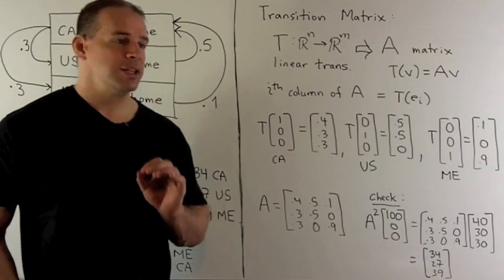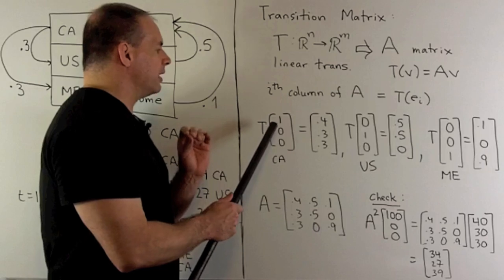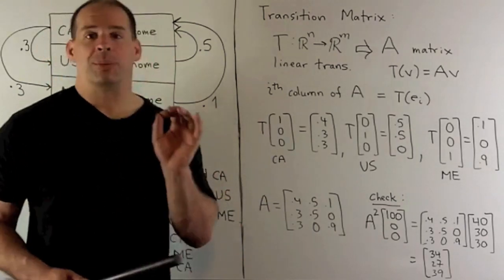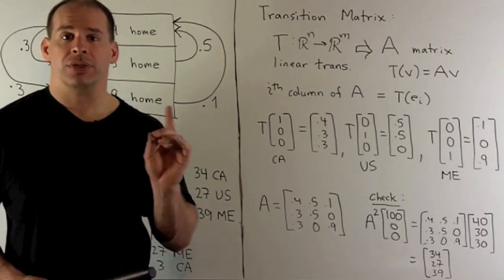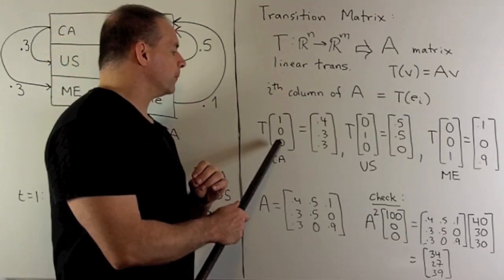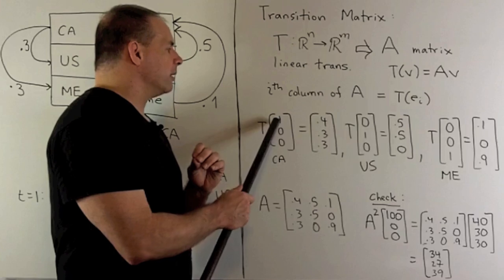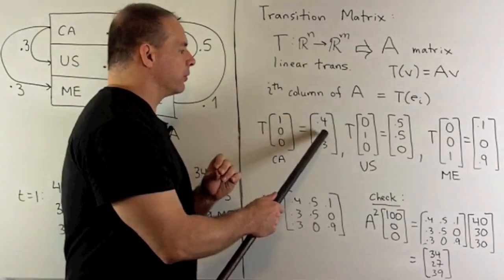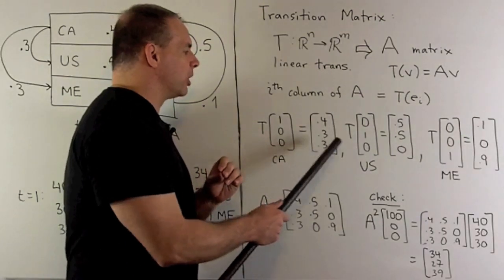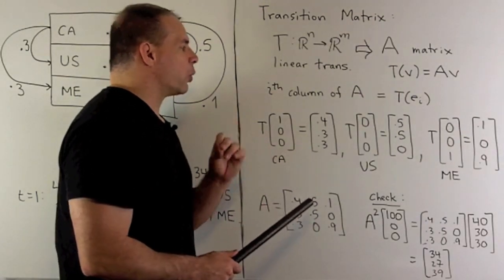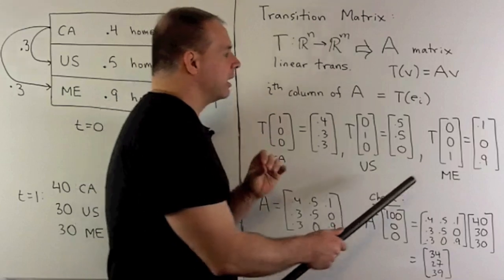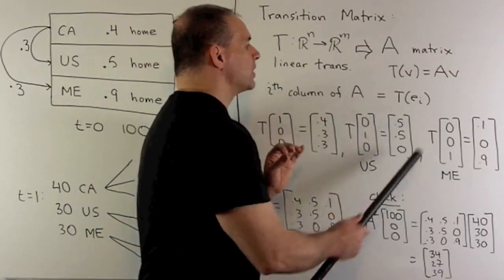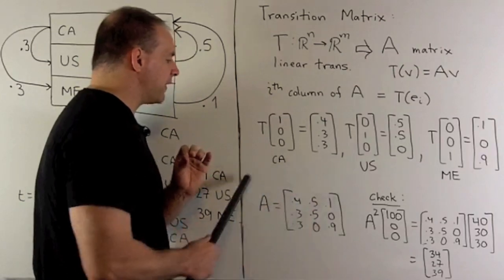It's going to have a one in the i-th position and then zeros everywhere else. In our case, I'm going to let first entry represent population in Canada. Second entry, population in the US. Third entry, population in Mexico. If I have one bird in Canada, that's going to go to 0.4 birds in Canada, 0.3 birds in the US, 0.3 birds in Mexico. Then we could work it out for one bird in the US and one bird in Mexico. We get our columns, so we get our transition matrix as follows.